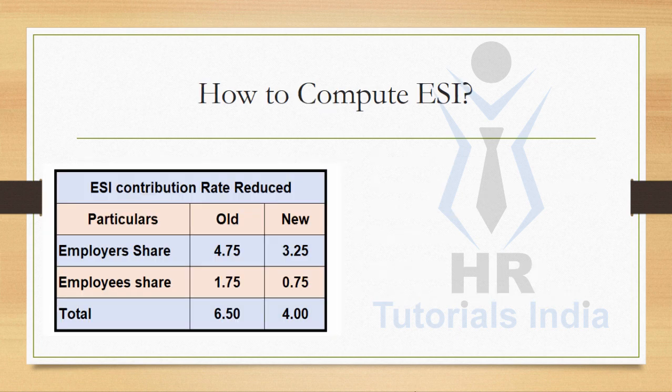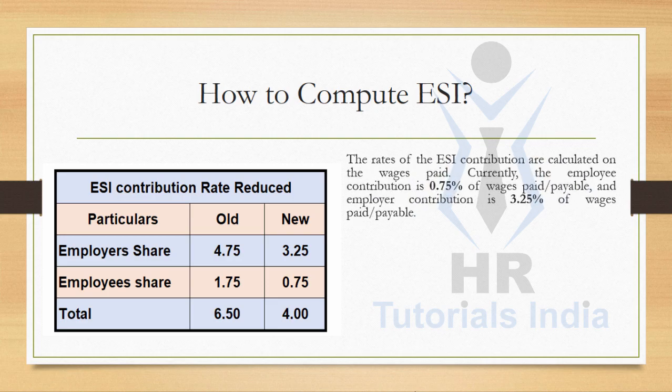How to compute ESI? ESI contribution rate has been reduced. Earlier, the employer share was 4.75% and employee share was 1.75%. But as per the new slab, employer share is 3.25% and employee share is 0.75%, making a total of 4%. Currently, the employee's contribution is 0.75% of the wages paid or payable, and employer contribution is 3.25% of the wages paid or payable.